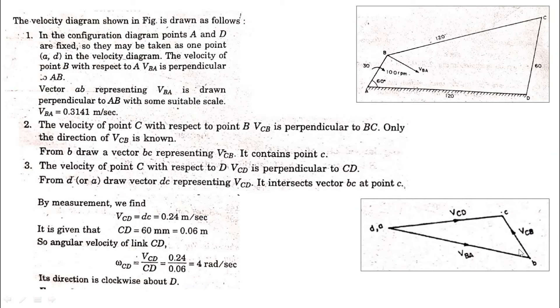We connect point B and point C to form a triangle here. Then we get our velocity diagram. Now you can measure it here, and from the measurement we get the value using the scale that one centimeter is equal to so much of meter per second.